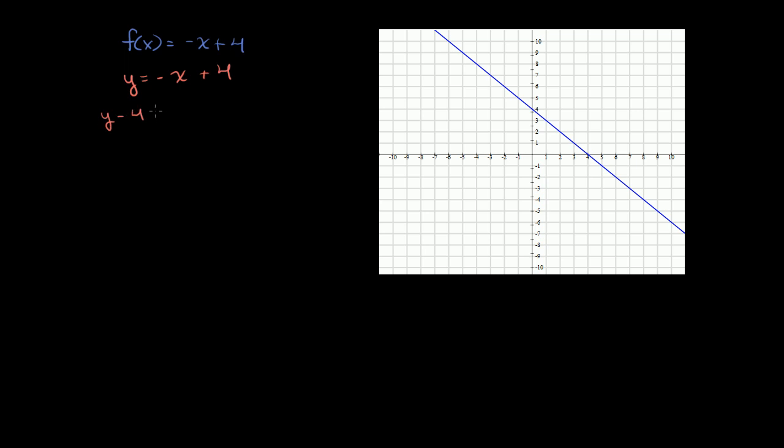You get y minus 4 is equal to negative x. And then to solve for x, we can multiply both sides of this equation times negative 1. And so you get negative y plus 4 is equal to x.